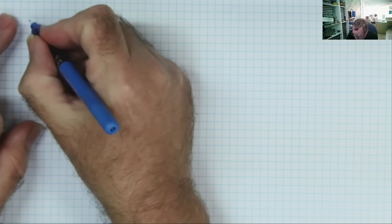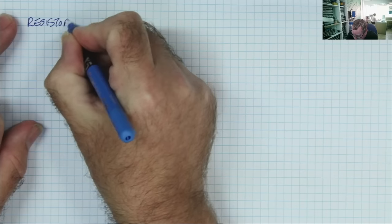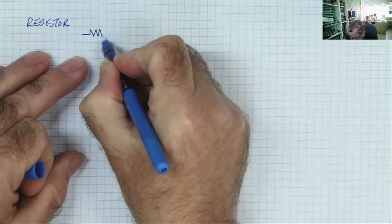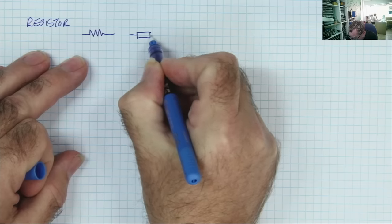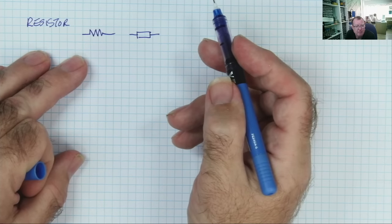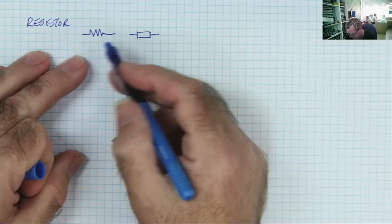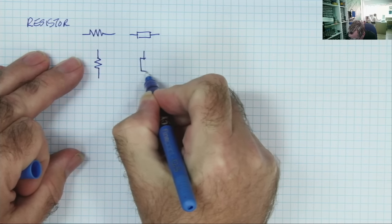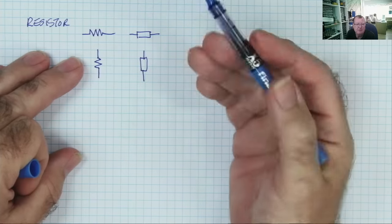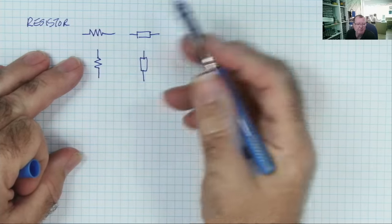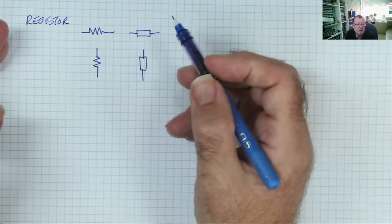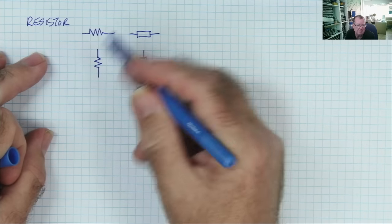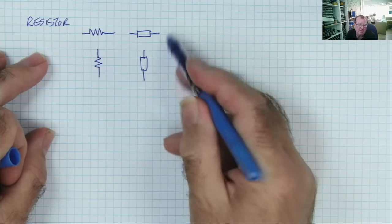Let's start with resistors — these are a very common type of component, found on basically every schematic. The symbol for a resistor actually has two different variations. We get the zigzag variation, and we get the rectangular box variation. They're interchangeable — you can use either of them. The symbol doesn't have to be horizontal; it could be vertical. The orientation of the symbol doesn't matter — these are all resistors.